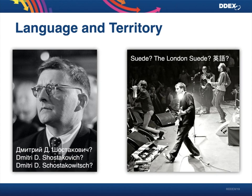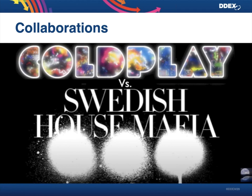What do you do with a band like Suede? Here in the UK they're typically called Suede, in North America they're mostly called the London Suede — and that's because there was already another band called Suede and they didn't want to be confused. We need to be able to communicate different language and territorial information both for language reasons and for legal reasons. Another issue we have only recently come to terms with — and we're in the process of defining the rules — is collaborations, which are becoming more and more common in pop music.